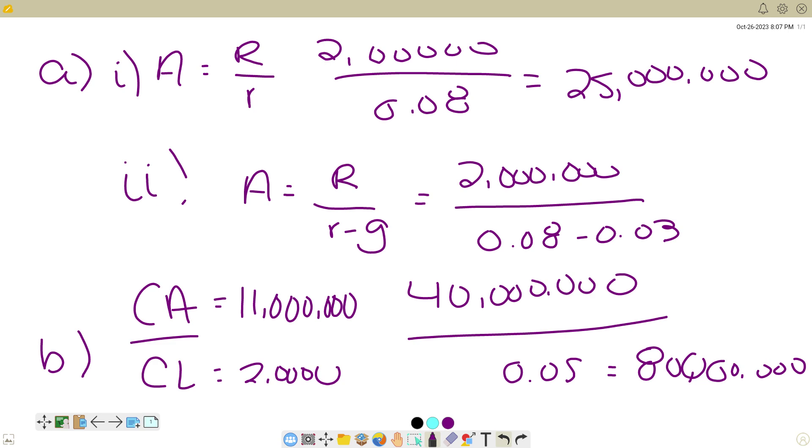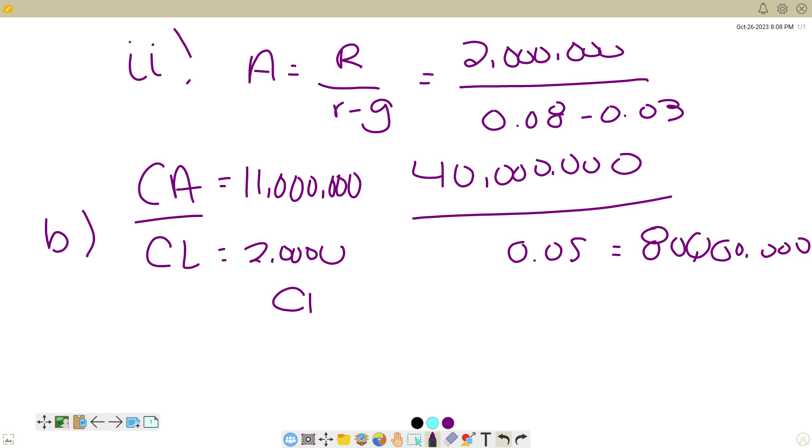Dividing those, we get a current ratio of 5.5. For our acid test ratio, or quick ratio,